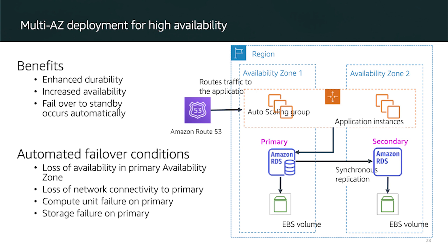One of the most powerful features of Amazon RDS is the ability to configure your database instance for high availability with a Multi-AZ deployment. When configured, Amazon RDS automatically generates a standby copy of the database instance in another Availability Zone within the same VPC. After seeding, transactions are synchronously replicated to the standby copy. Multi-AZ deployment enhances availability during planned maintenance and helps protect against instance failure and Availability Zone disruption.